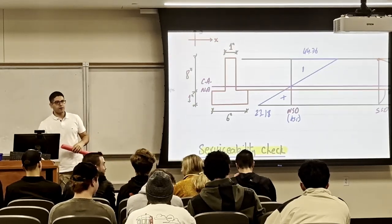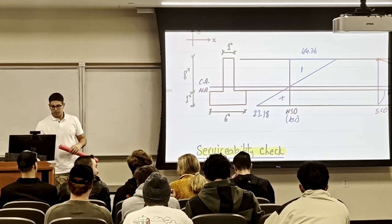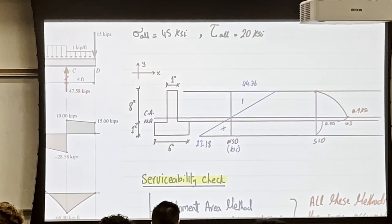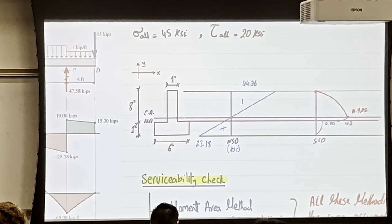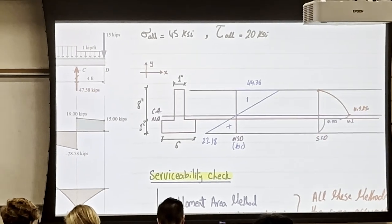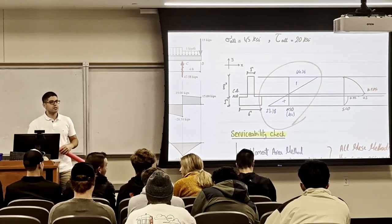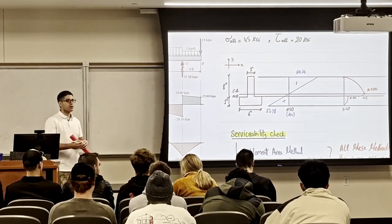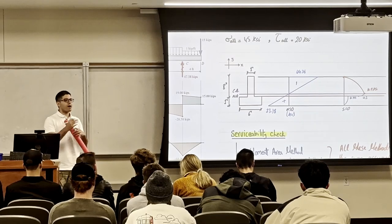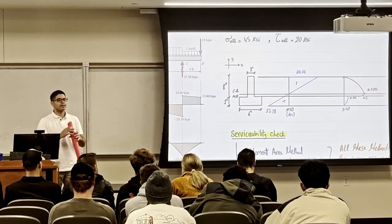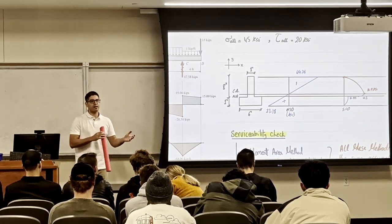You put those assumed dimensions in, calculate the stresses, and find whether it's safe or not. If it's unsafe in shear, you know you need to increase the width. If it's unsafe in normal stresses, you know you need to increase the inertia. So now I've given you the map of how to approach design without even doing any calculations.